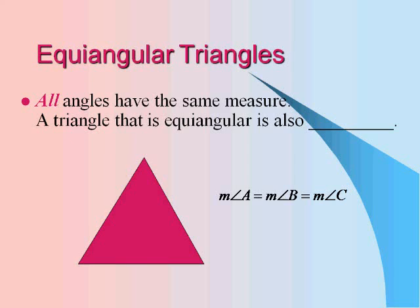Then equiangular triangles, all angles have the same measure. A triangle that is equiangular is also equilateral. So the measure of angle A will equal the measure of angle B will equal the measure of angle C, and all angles will end up being 60 degrees each.